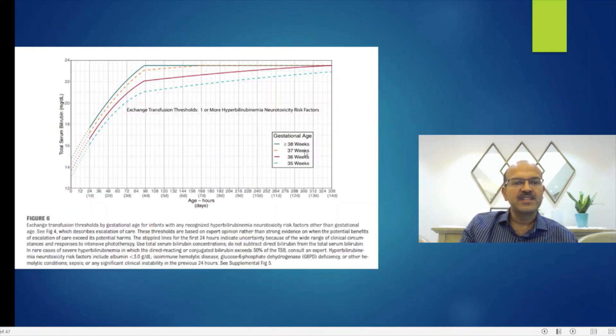One more point about exchange transfusion is that we should be targeting 40% hematocrit so that there is more albumin and less red blood cells, which can bind the bilirubin better because the purpose of exchange transfusion is for the bilirubin to be bound by albumin and removed when you are removing blood.